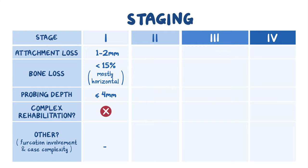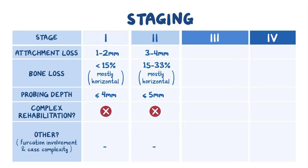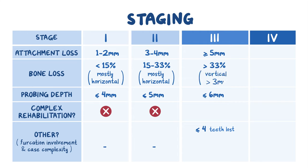Stage two is characterized by moderate attachment loss of three to four millimeters or bone loss of 15 to 33%, probing depths of five millimeters or less, mostly horizontal bone loss, and no need for complex rehabilitation. Stage three is characterized by severe attachment loss of five millimeters or greater or bone loss over 33%, up to four teeth lost to periodontitis, probing depths of six millimeters or greater, and vertical bone loss greater than or equal to three millimeters.